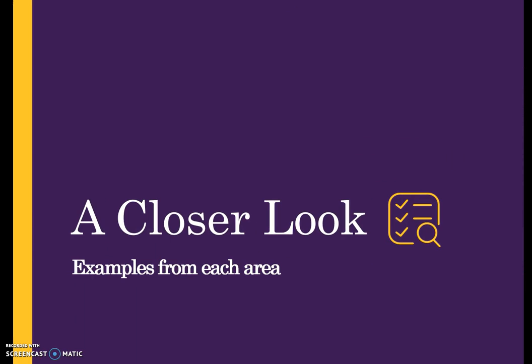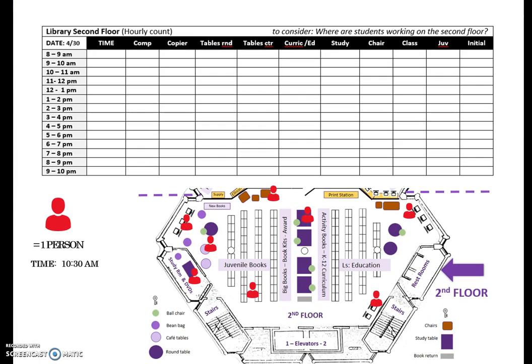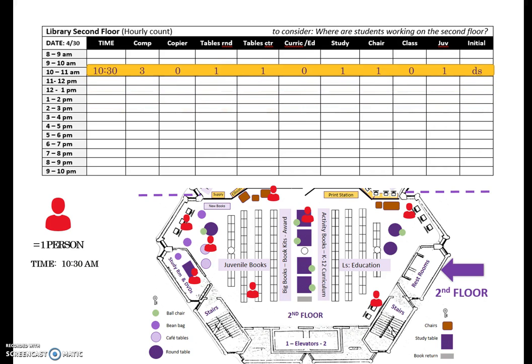Let's take a closer look at gathering data with examples from each area. Here is a library second floor chart; below it is the second floor map. Each red silhouette represents one user in an area. When gathering data at 10:30 AM, how would you complete the chart? There are three people using computers, one sitting at a cafe table, one sitting at a center table, one person in the study room, and one person in the juvenile stacks.